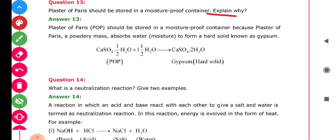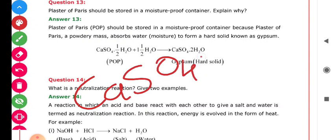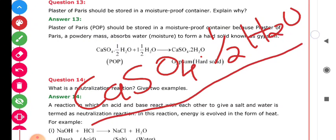Question number 13: Plaster of Paris should be stored in a moisture-proof container. Explain why. The P.O.P. material (CaSO4·½H2O) should be stored in a moisture-proof container, meaning in an atmosphere where there is no moisture. Why should we do this?